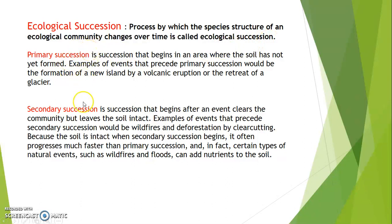There are two types: primary succession and secondary succession. Many factors are responsible for succession — some internal as well as external. Internal factors may be the communities themselves, which lead to changing environmental conditions. Internal factors are also known as autogenic factors. Succession is always a unidirectional process — it is never bidirectional.